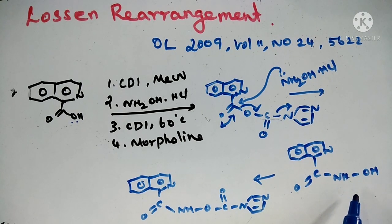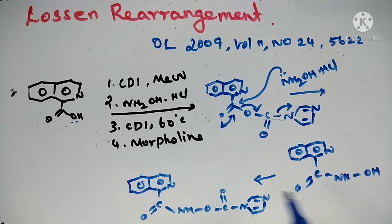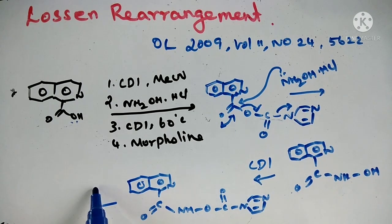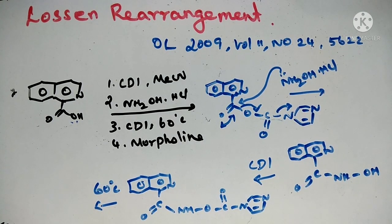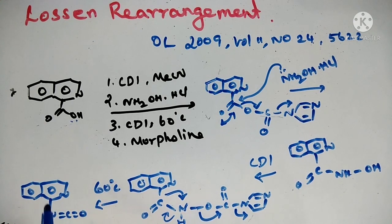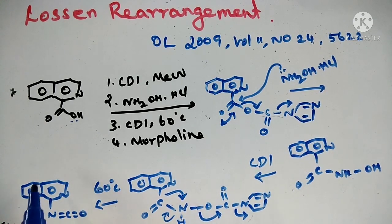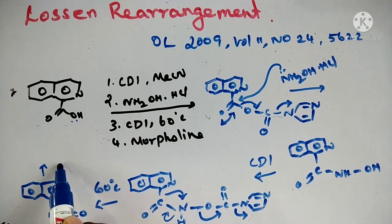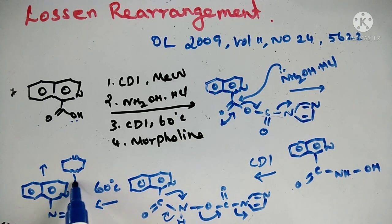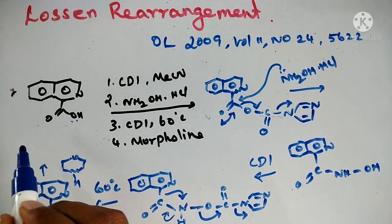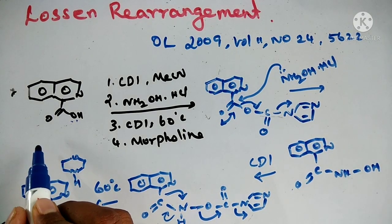Next step: if you react the hydroxamic acid with CDI and heat to 60 degrees centigrade, you will get an isocyanate. The fourth step is this isocyanate reacting with morpholine, and you will get a morpholine-linked product — a urea-type product with morpholine.